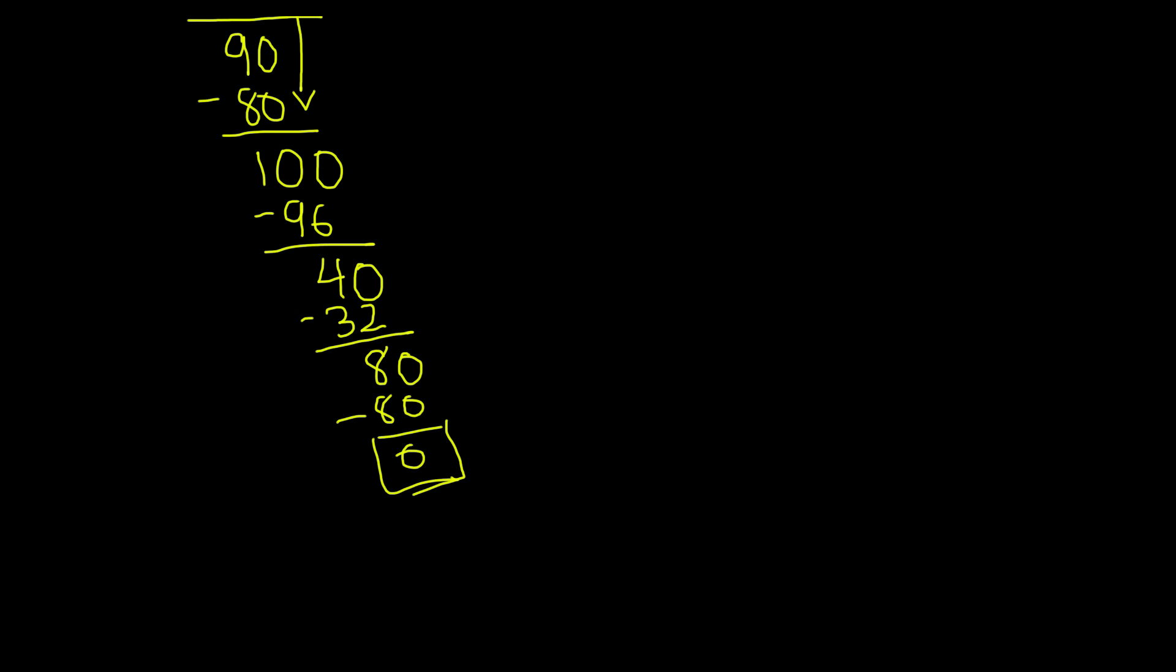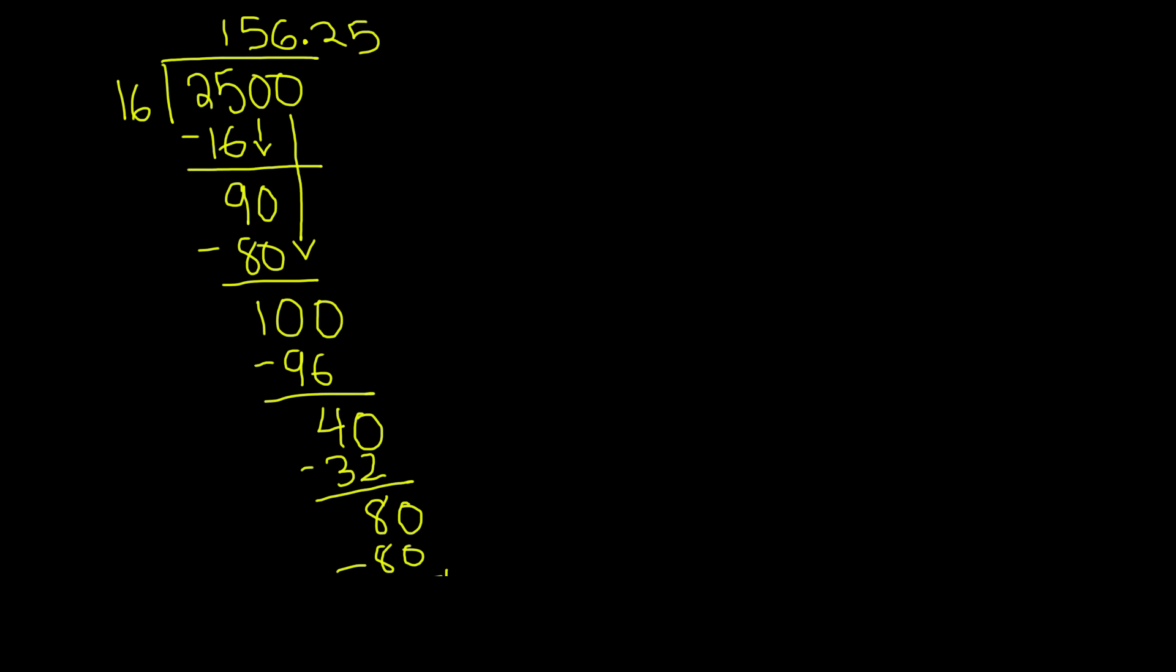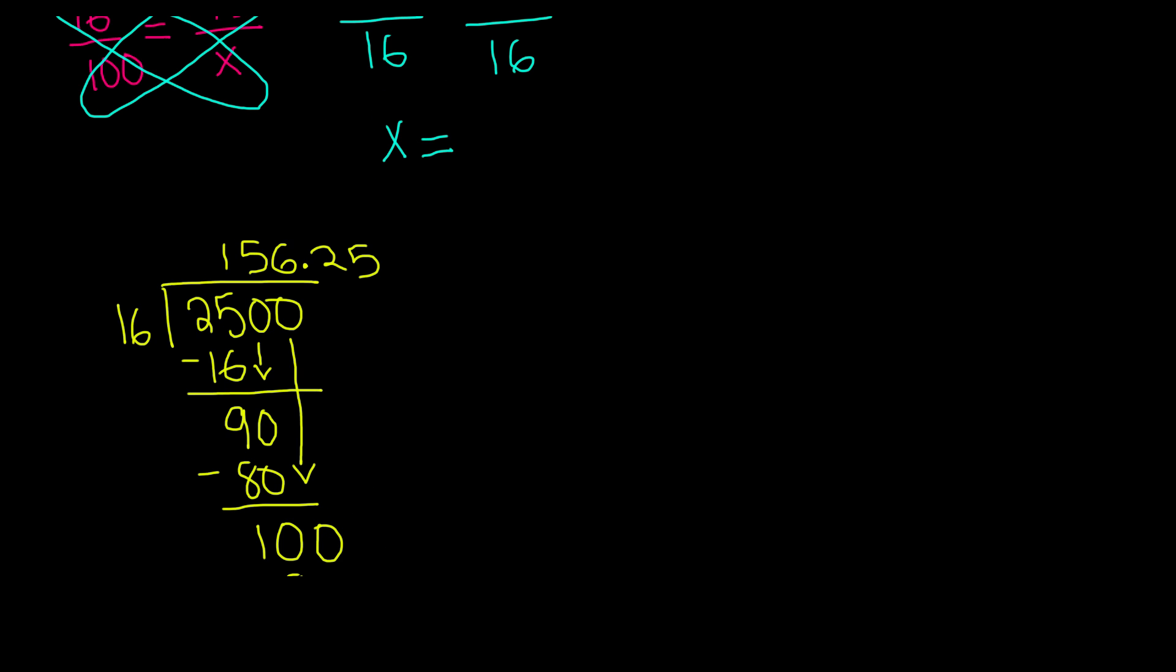And we are left with 0. That means we have no remainder. And even though this does seem very long, it's not that hard. It's just long division. That means 2,500 divided by 16 is 156.25.